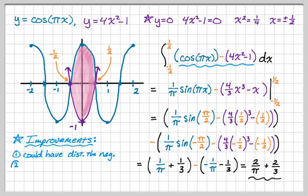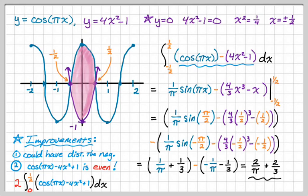The second thing, which is way more important, is I could have noticed that cosine of pi x minus 4x squared plus 1 is actually an even function. And since it's an even function, what I could have done is I could have rewritten the whole integral as 2 times the integral from 0 to 1 half of cosine of pi x minus 4x squared plus 1 dx. And that would have been a much easier problem to solve. So you should always look to see those sorts of things.